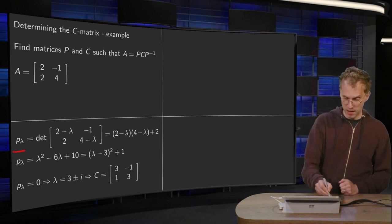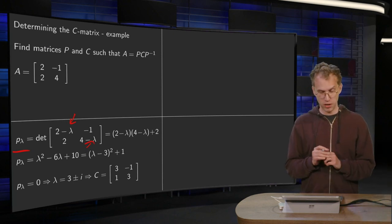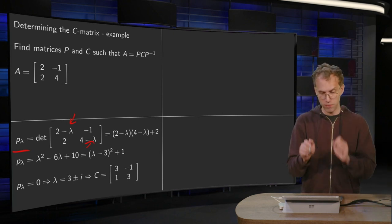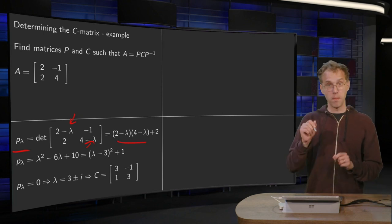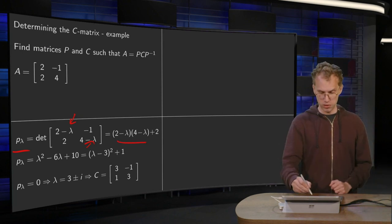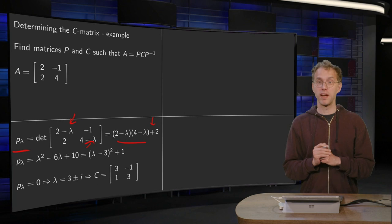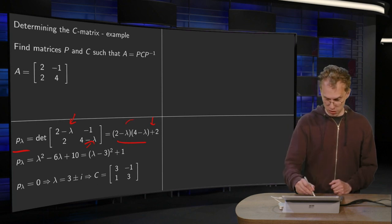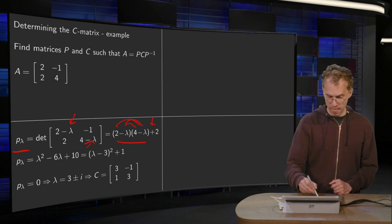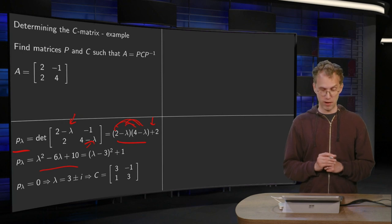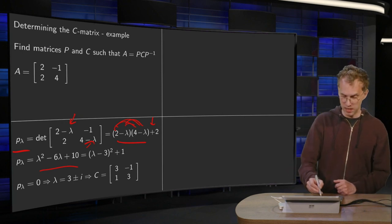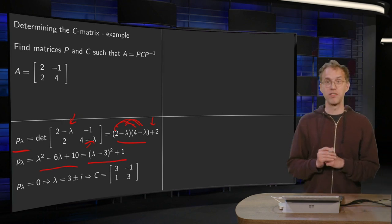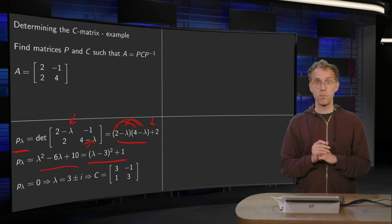So P_λ, then we put a minus λ on the diagonal. Then we compute the determinant, so (2 minus λ) times (4 minus λ) minus minus 1 times 2, so plus 2. And simplify a bit, we get λ squared minus 4λ minus 2λ minus 6λ and plus 8 plus 2 equals plus 10. So there we have our P_λ, which can be written as (λ minus 3) squared plus 1. We completed the square here.